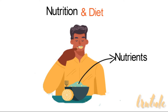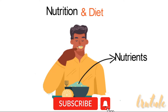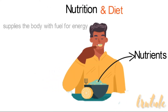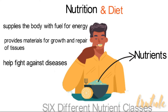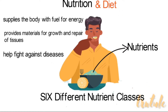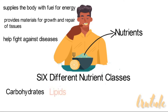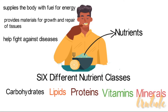Here are some other important reasons why we need food. Food supplies the body with fuel for energy, it provides materials for growth and repair of tissues, and it helps the body fight against diseases. Food can do all these because it contains six different nutrient classes: carbohydrates, lipids, proteins, vitamins, minerals, and water.